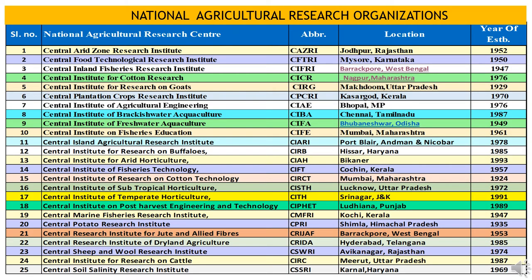Now we will study national agriculture research organizations, their locations, and establishment dates. First is CAZRI — Central Arid Zone Research Institute — headquartered at Jodhpur, Rajasthan, established in 1952. Second is CFTRI — Central Food Technological Research Institute — headquartered at Mysore, Karnataka, established in 1950. Third is CIFRI — Central Inland Fisheries Research Institute — headquartered at Barrackpore, West Bengal, established in 1947.